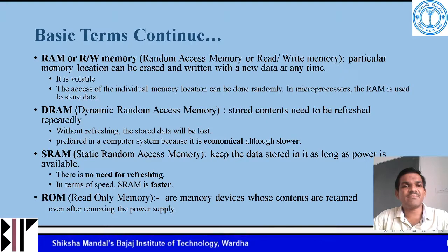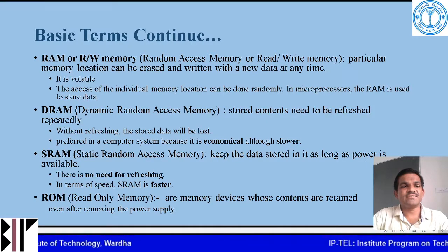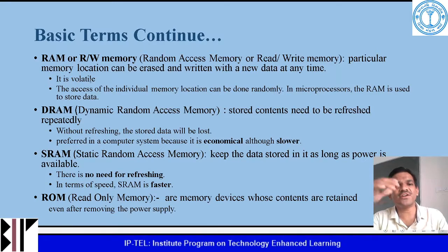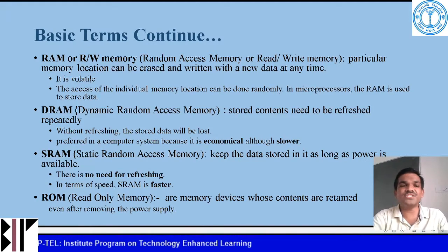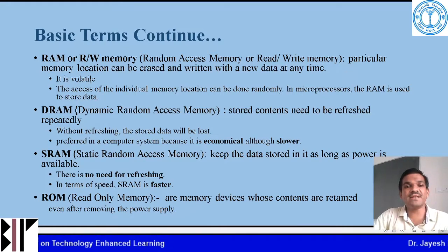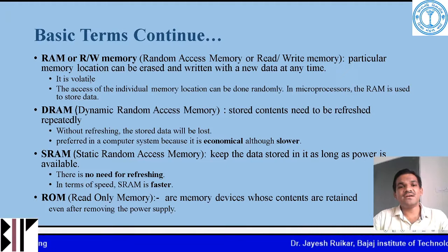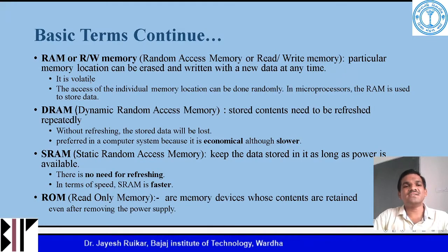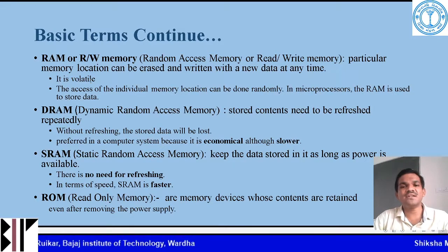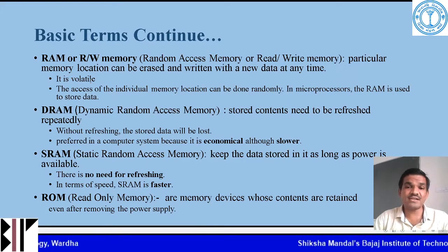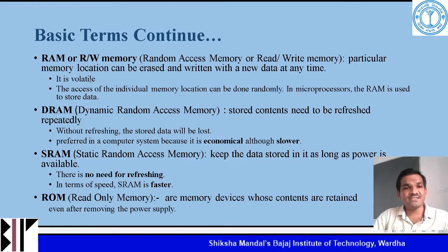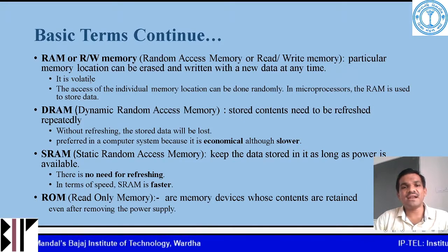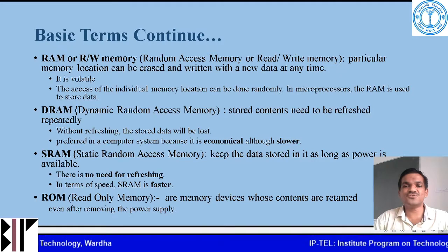The next basic term is RAM, or read/write memory. RAM stands for random access memory — it is a type of semiconductor memory in which particular memory locations can be erased and new data written to them. This memory is volatile, meaning that when power is cut, all data stored in it is lost. Access of RAM can be done randomly, and in a microprocessor, RAM is used to store data.